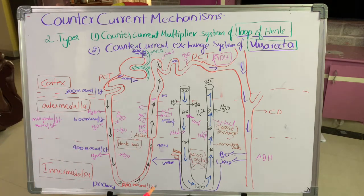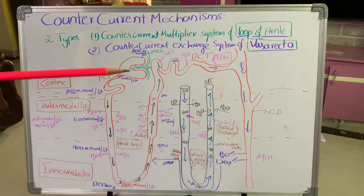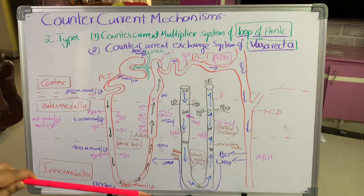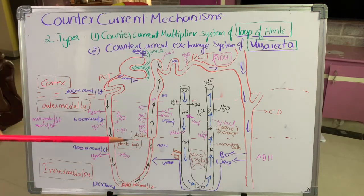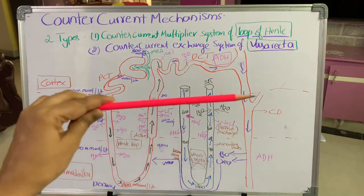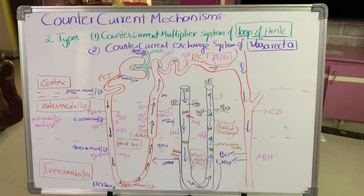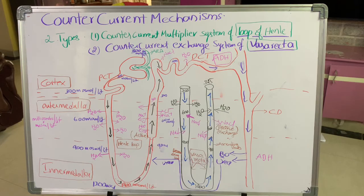These are the two mechanisms by which hypertonic urine is formed. Mainly the loop of Henle creates hyperosmolarity in the interstitial fluid of the medulla, so that water is easily drawn from the collecting duct and the urine becomes hypertonic. Hope you understand.